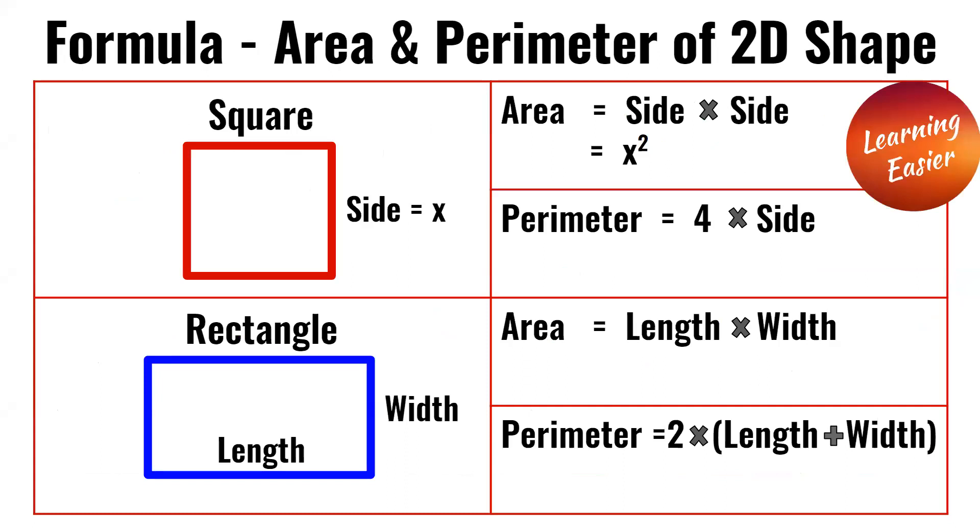For the square, the area is side times side or x squared, and the perimeter is 4 times side.